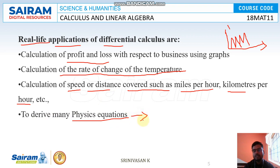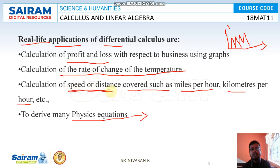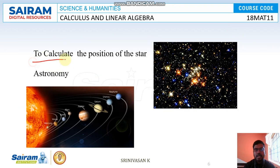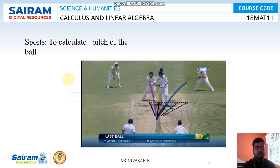Another application is to derive many physics equations — this is an indirect application of differential calculus in physics. Beyond distance and speed, we can also calculate the position of stars in space, such as determining the distance from Earth to each star, using differential calculus in astronomy.